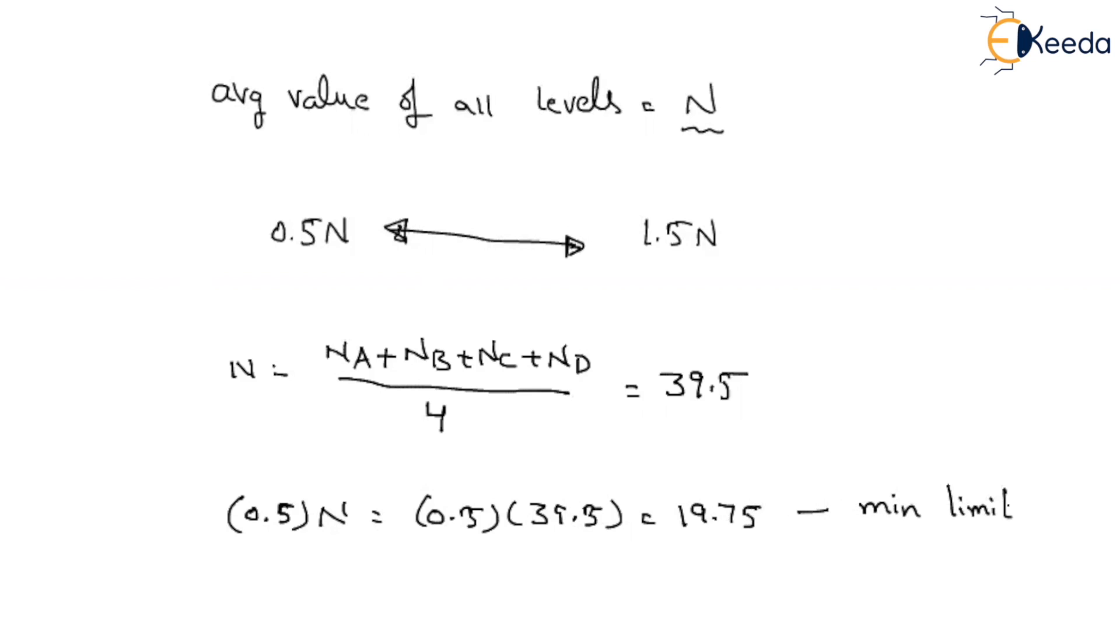That means, whatever the value, it should not go less than this much. Similarly, what is the more than 50% value? That means 1.5 times N. So what is 1.5 times the average value? That is 39.5. So how much we will get? We are getting it around 59.25. So this is the maximum limit.